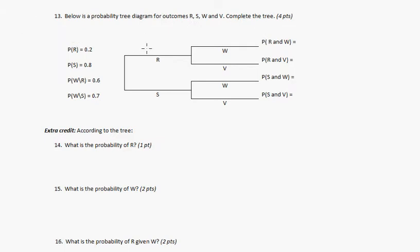So the first thing we need to do is just put the probabilities down on the tree. So 0.2. And then the probability of S is 0.8. So they add up to one.